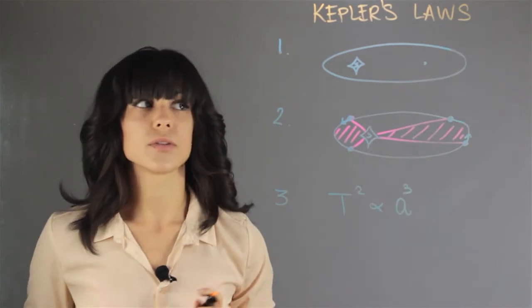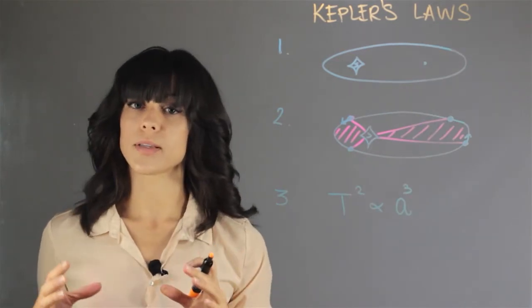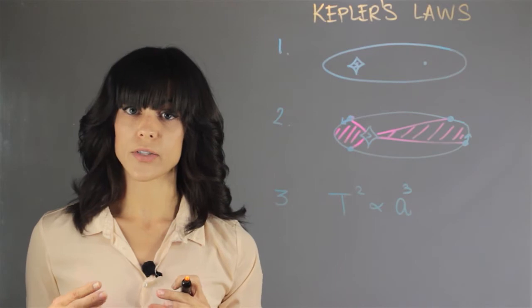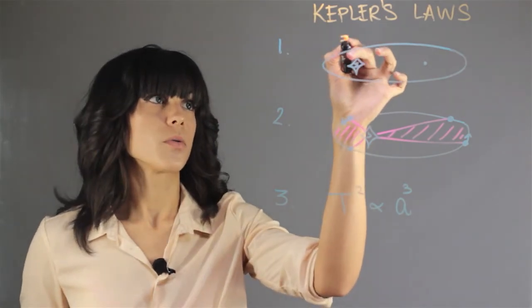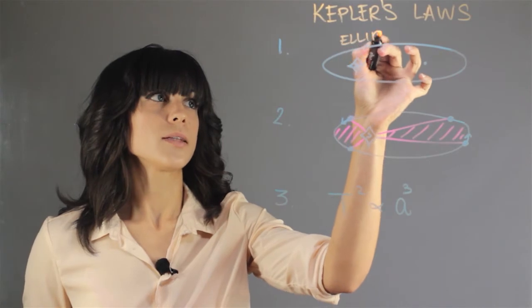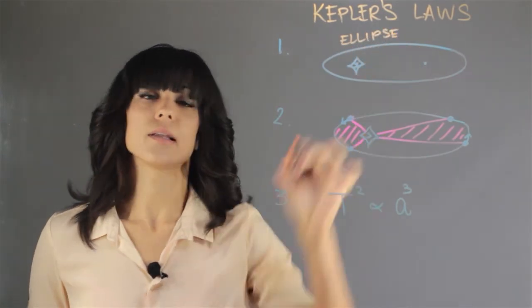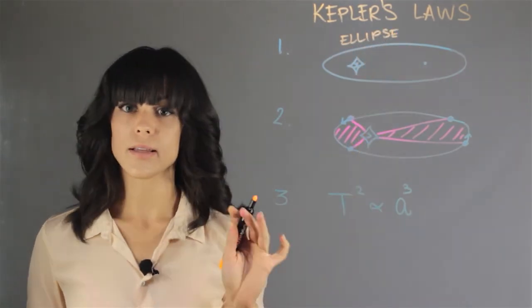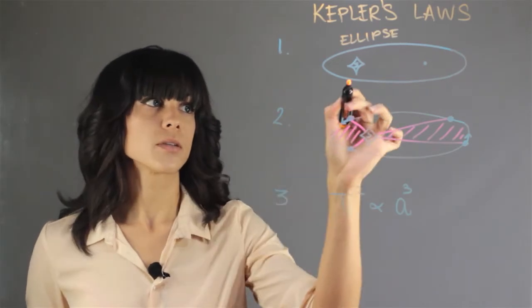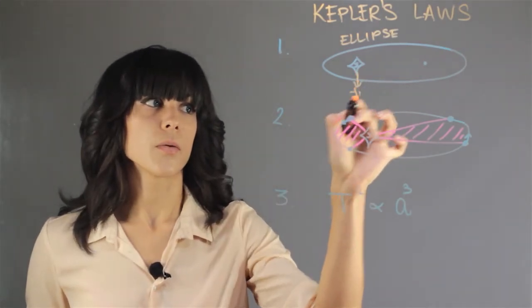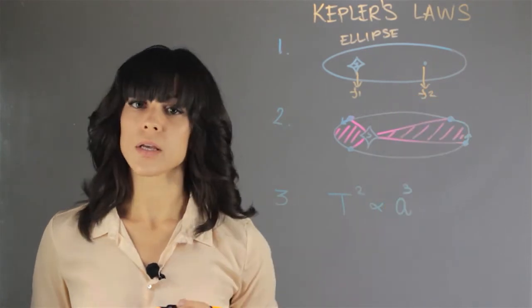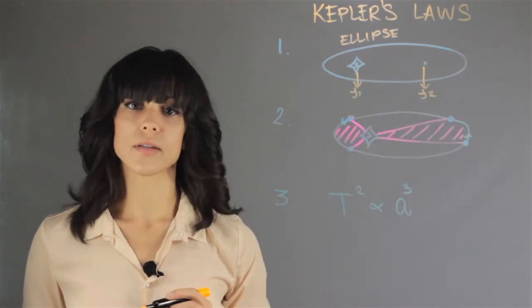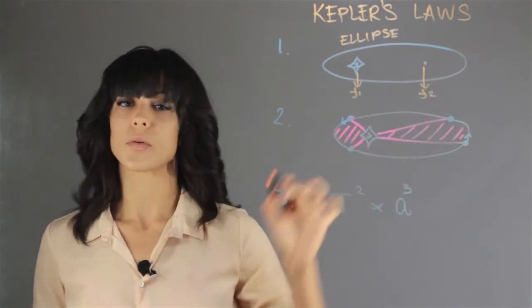The first law is that despite most people thinking orbits are circular, they're actually elliptical. Planets orbit the Sun in ellipses, and in the ellipse there are two focal points: foci 1 and foci 2. At foci 1 we have the Sun, and the other is just focal 2.